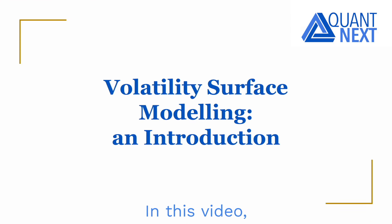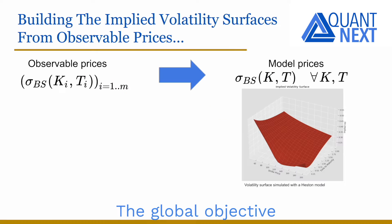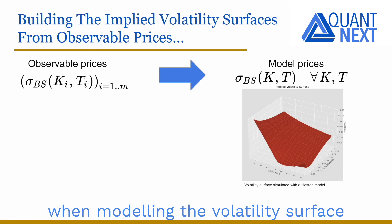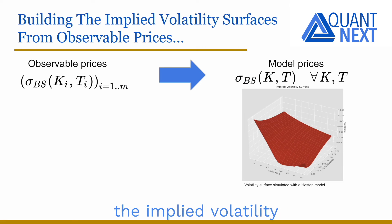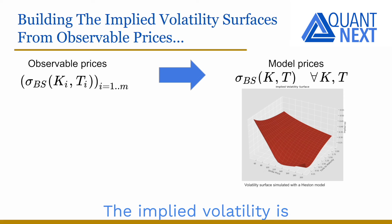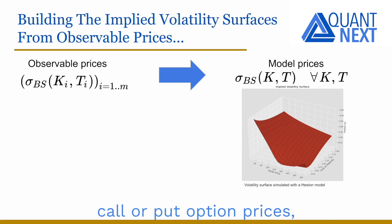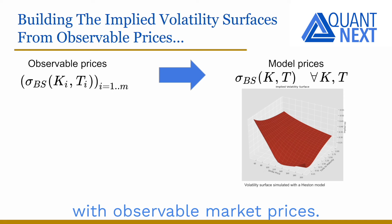Hi everyone. In this video I will give an introduction to the modeling of the volatility surface. The global objective when modeling the volatility surface is to get with the model the implied volatility for all strikes and maturities. The implied volatility is the volatility implied by Black-Scholes call or put option prices, and the model is calibrated with observable market prices.